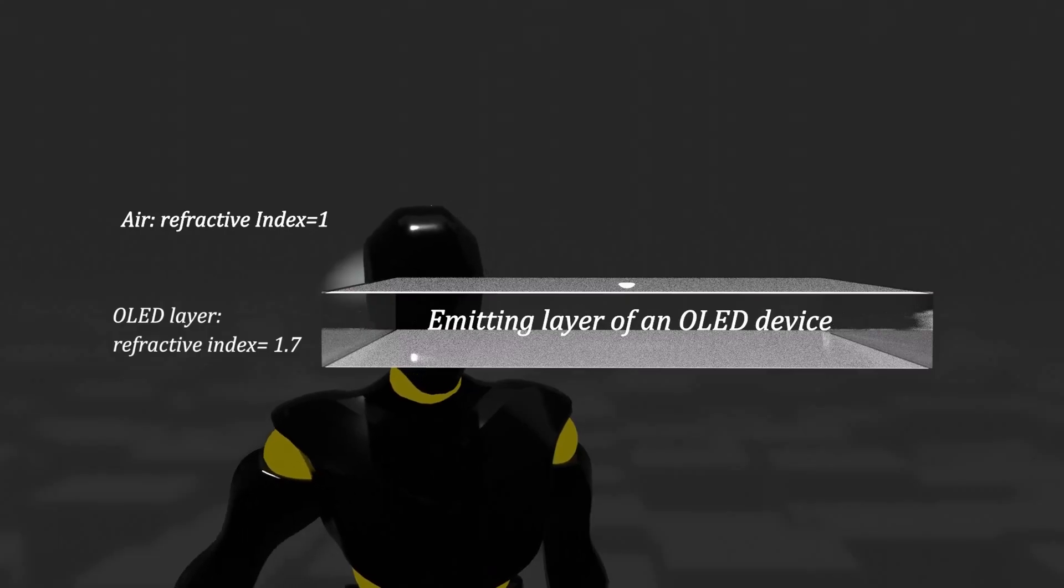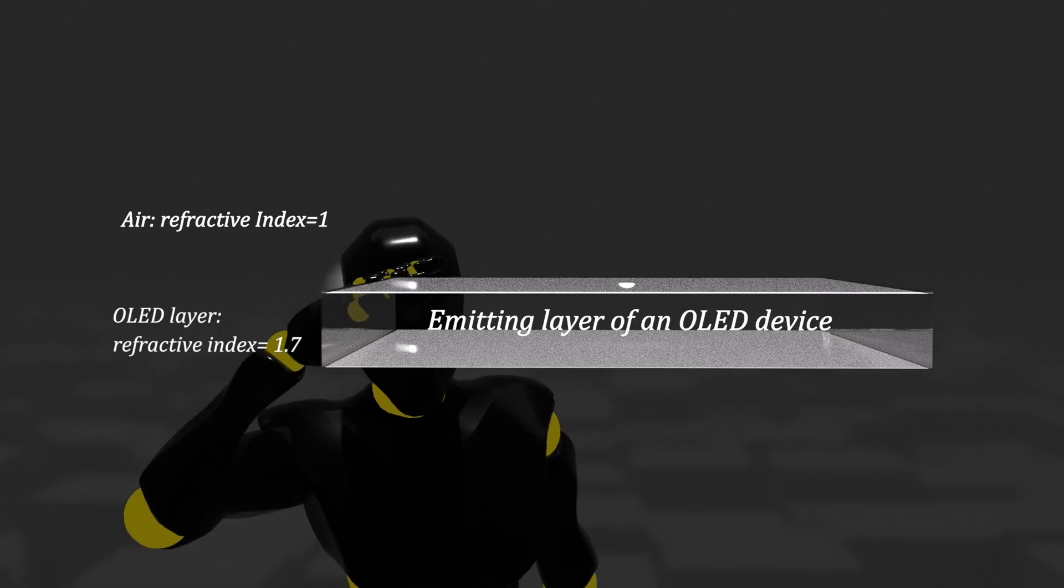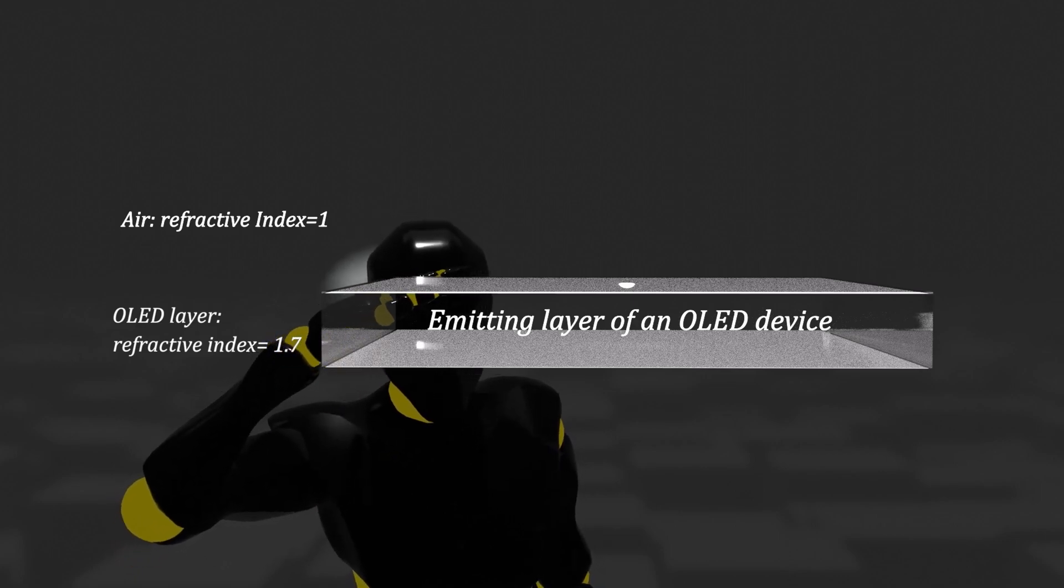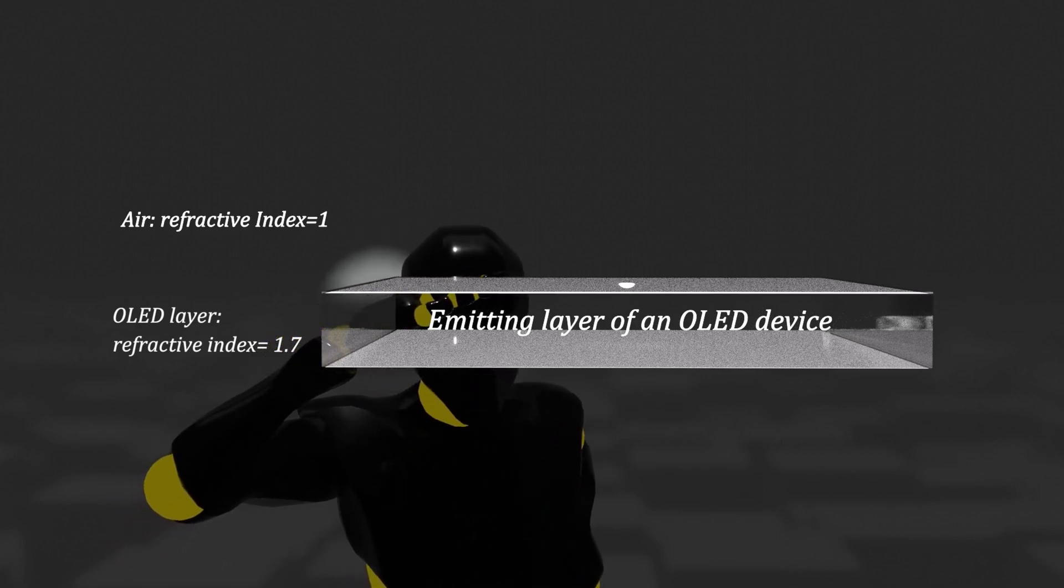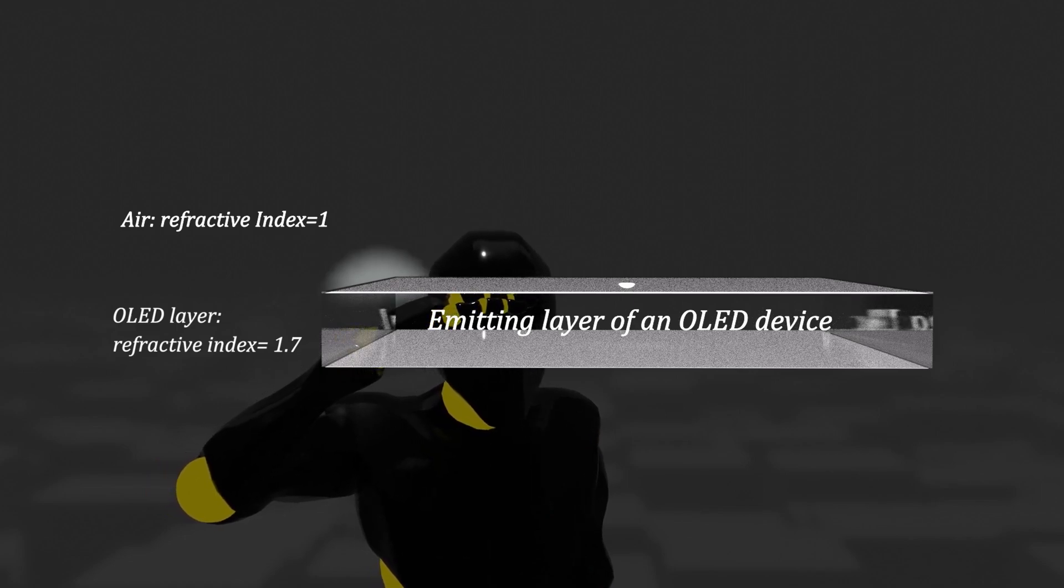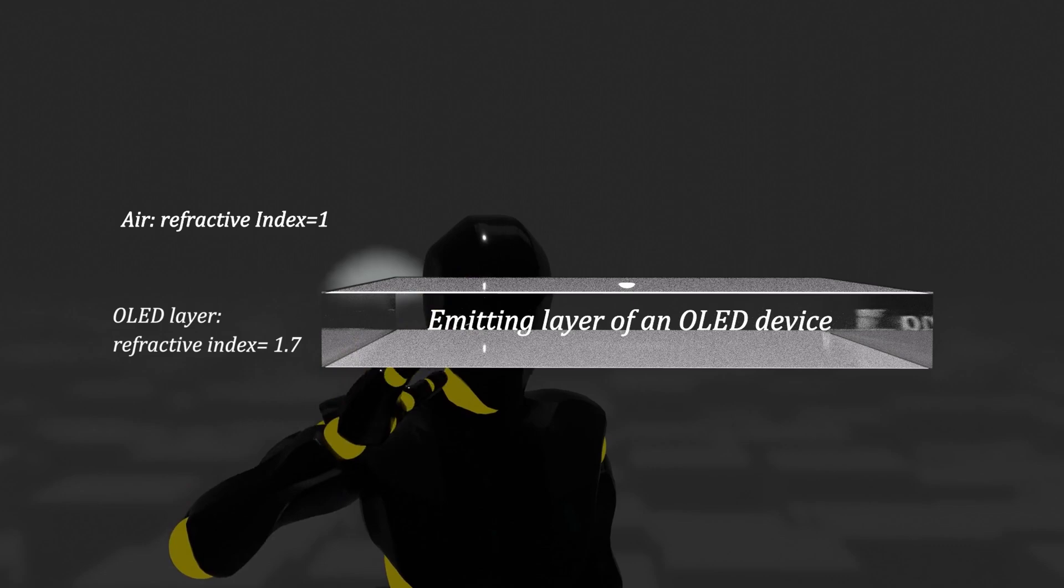Let's see the phenomenon in animation. Here's an OLED device. To understand conceptually, only the light-emitting layer of OLED where light is generated is shown, excluding electrodes or parts. Let's see what happens to the light generated inside the device.